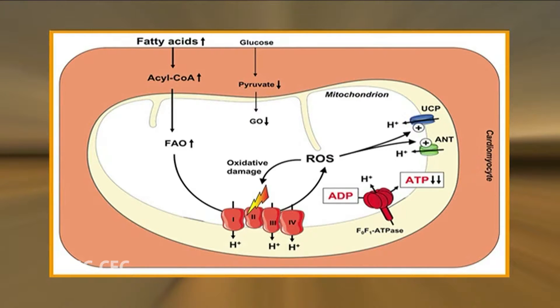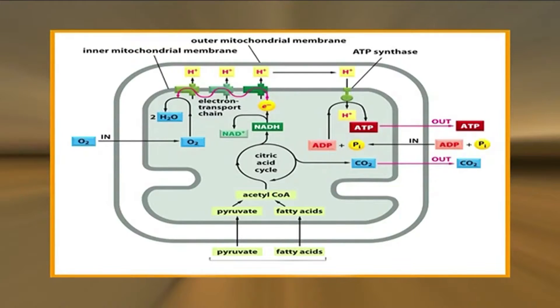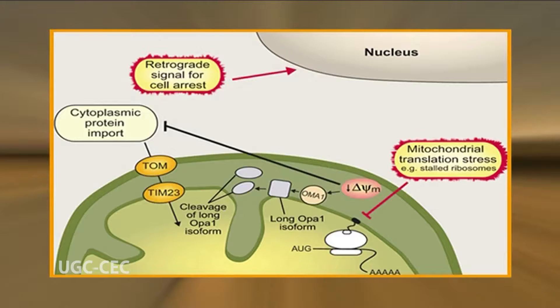We will discuss about mitochondria. Mitochondria play a critical role in the generation of metabolic energy in eukaryotic cells. They are responsible for most of the useful energy derived from the breakdown of carbohydrates and fatty acids, which is converted to ATP by the process of oxidative phosphorylation. Most mitochondrial proteins are translated on free cytosolic ribosomes and imported into the organelle by specific targeting signals.